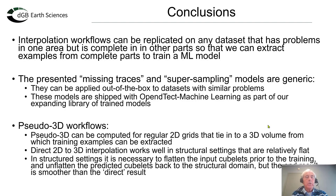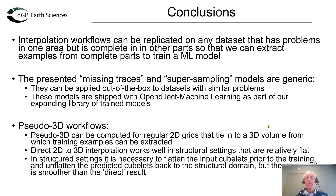Let me wrap up with conclusions. I've presented a number of interpolation workflows that can be replicated on any dataset with problems in a particular area, as long as complete data exists elsewhere in the survey. In those complete areas, we extract training examples by artificially introducing the same problems, train a machine learning model, then apply it to the real problem area. The missing-trace and supersampling models are generic — they can be applied out of the box to datasets with similar problems — and we are shipping these models with our OpenDetail machine learning solution as part of an expanding library of trained models.